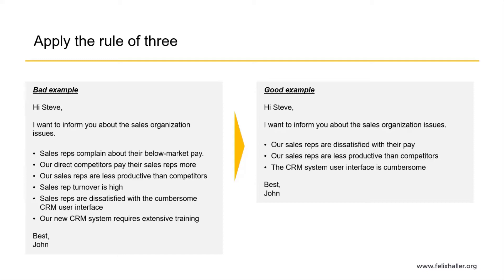In this example, you're informing your supervisor about the issues within the sales organization. You could communicate all six or seven issues, but very likely he won't care about all of them. He cares about the key issues, so synthesizing and communicating the three most important ones — or grouping them — is more powerful and effective. You as the communicator have to decide what is most important. That's why the rule of three is so effective: it forces you to condense your information to the key things and makes each point more impactful.